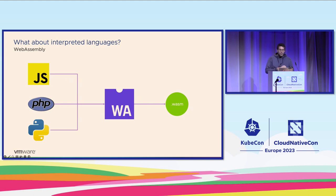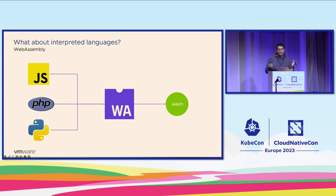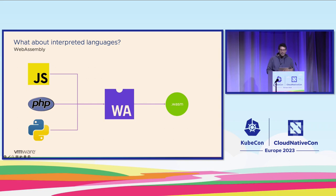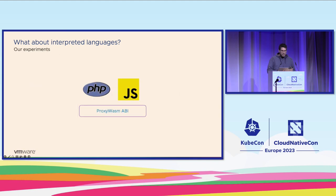This WebAssembly module can be run on any platform that supports WebAssembly, not only the Envoy proxy. This is a different environment in which you run the WebAssembly binary, because you need to adapt to the ABI of Proxy Wasm.